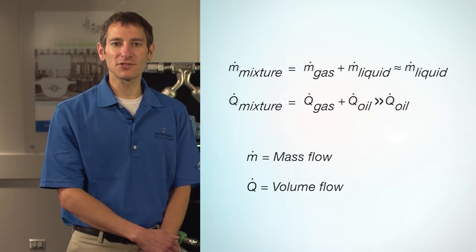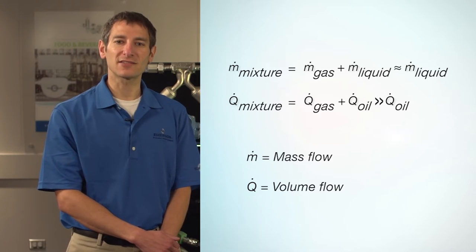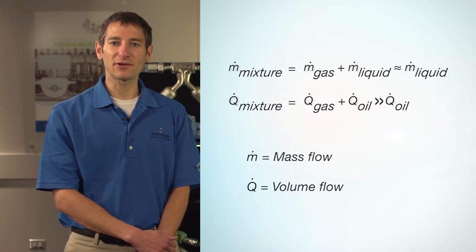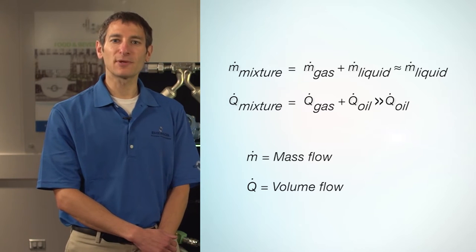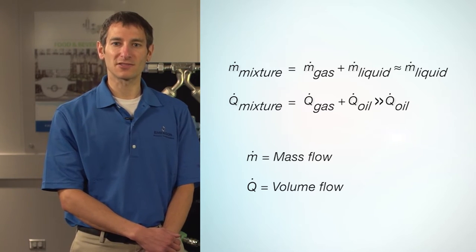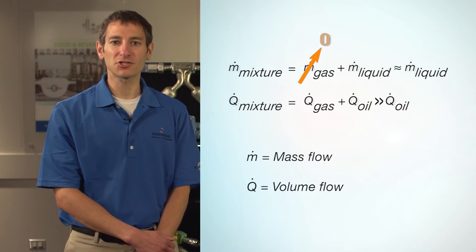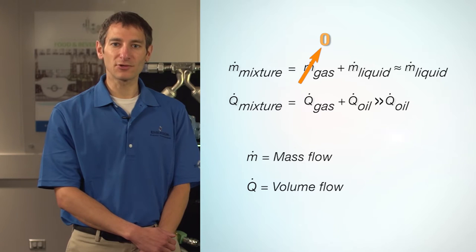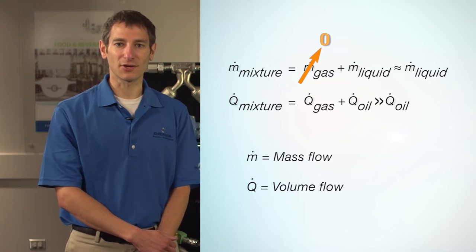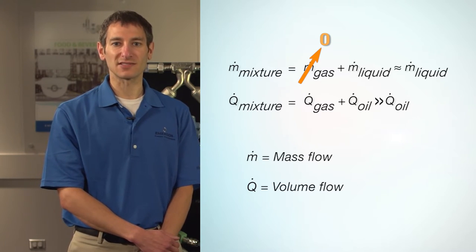In applications involving liquid flows with small amounts of entrained gas, mass flow meters have an inherent advantage. Users typically want to know the liquid quantities, not the mixture quantities. In the case of mass flow measurement, the mixture mass flow, which we measure, is nearly identical to the liquid mass flow, because the mass of the gas is negligible.